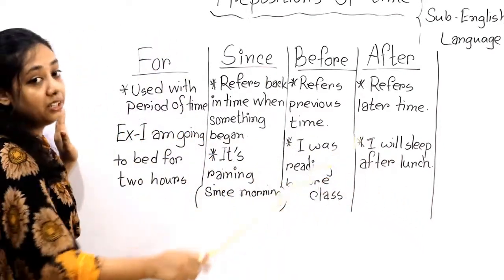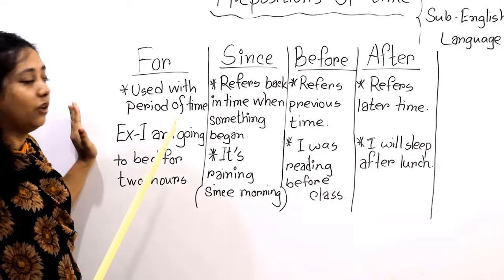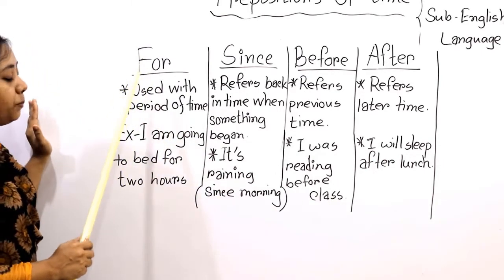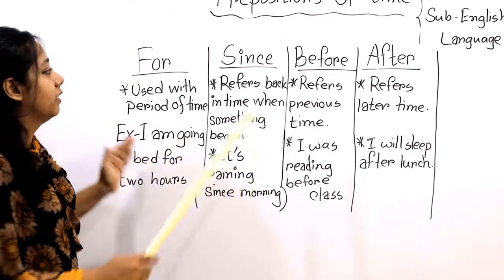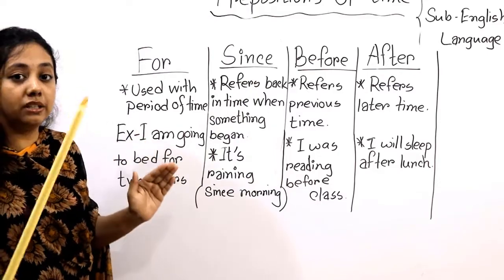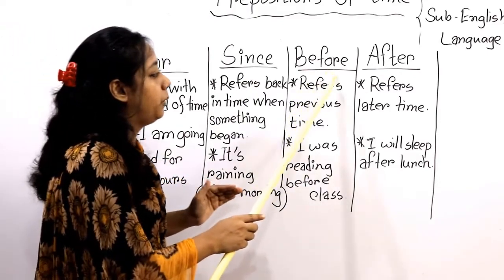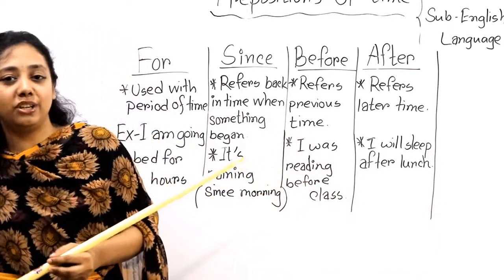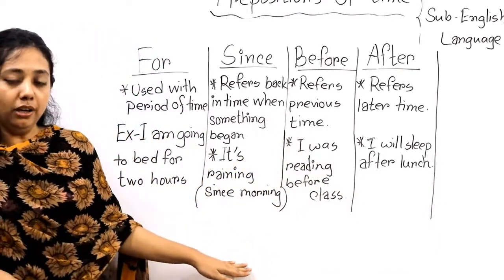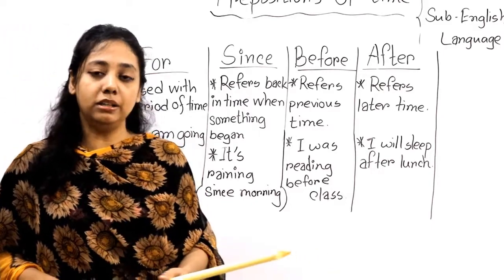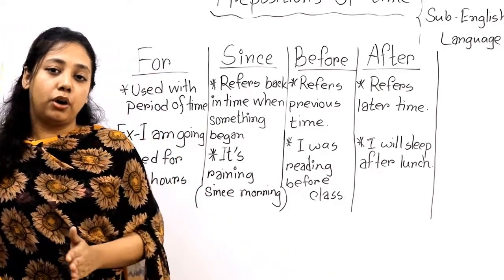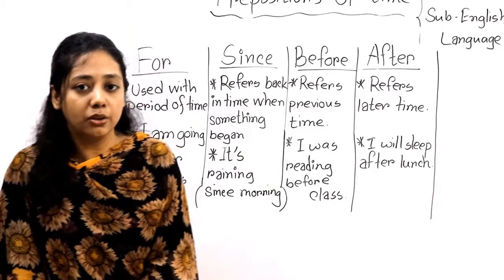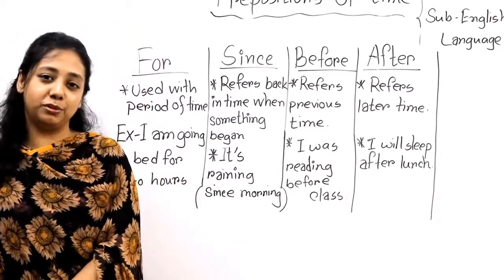So is it clear? 'For' sits before specific time, 'since' sits before indefinite time, 'before' refers to previous time, and 'after' refers to later time. Like: I will do my homework after the class. This is all for today. I have given some exercises on your lecture sheet — please try to follow the lecture sheet first and then write them in your classwork copy. Assalamualaikum, bye bye.